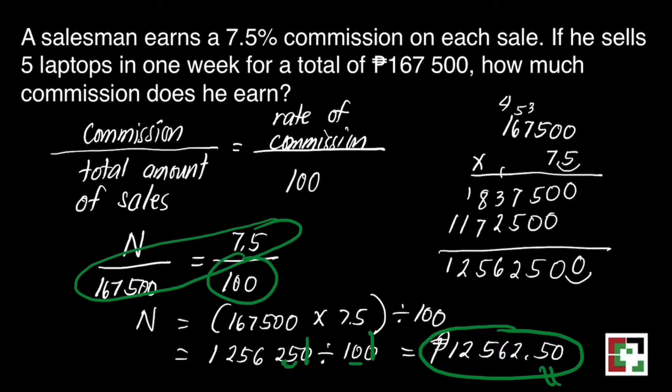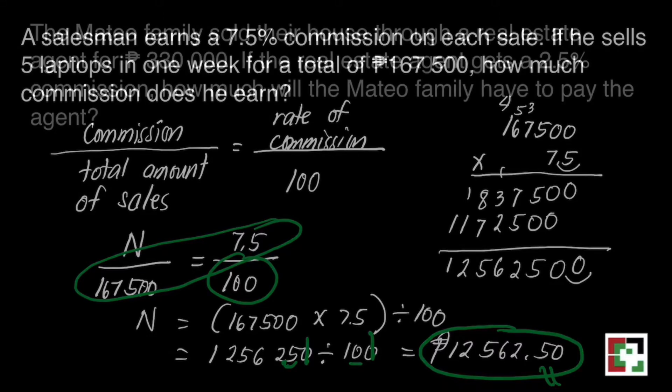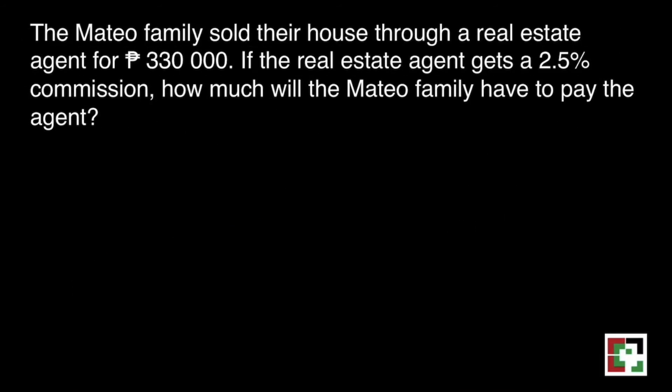And that's it. Next question: The Mateo family sold their house through a real estate agent for 330,000 pesos. If the real estate agent gets a 2.5% commission, how much will the Mateo family have to pay the agent?